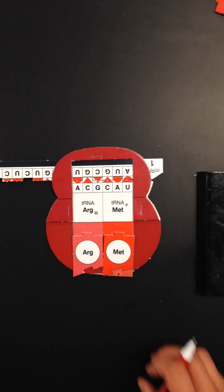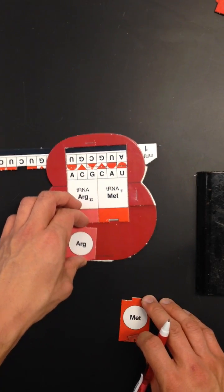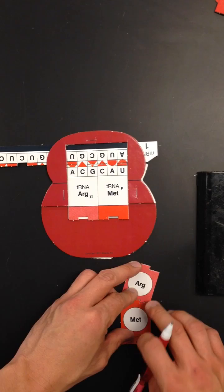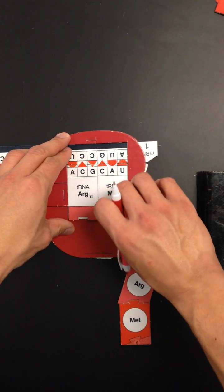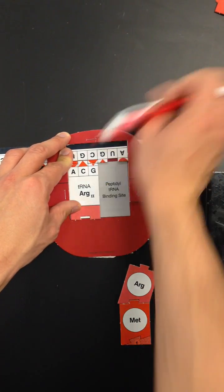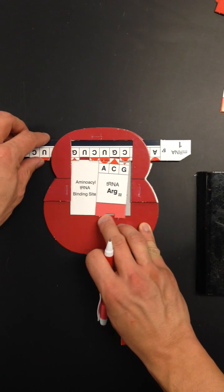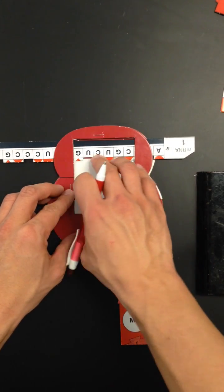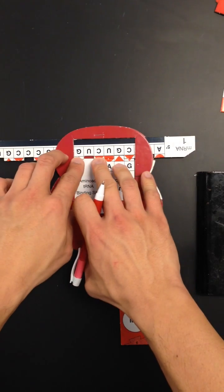Once I've done that, I'm going to separate my amino acids from the transfer RNAs because the ribosome is going to bond them together. This is going to start the building of our protein chain. Once I've bonded my amino acids together, I'm then going to remove my first transfer RNA, put it off to the side, and then I'm going to slide my messenger RNA down three bases, because remember, the ribosome reads it at three bases at a time.